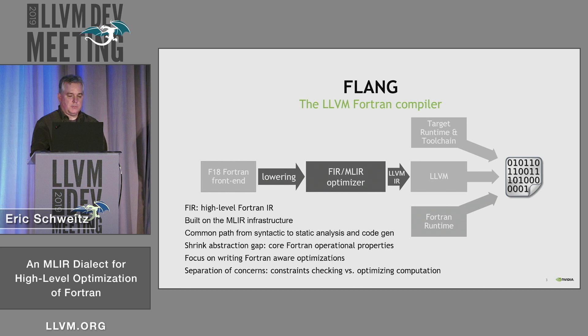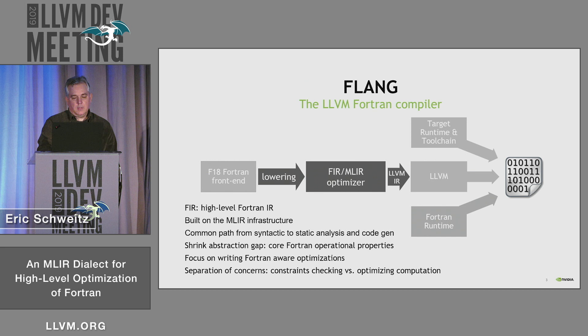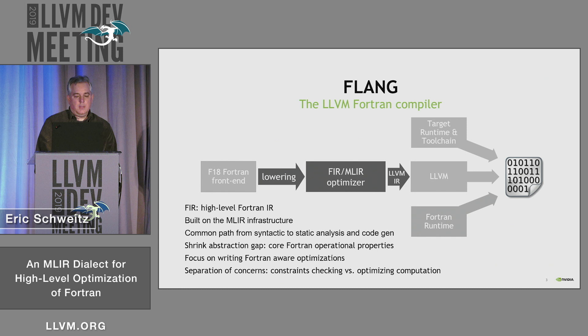The Fortran IR is intended to be a higher-level IR to lower the semantics gap between Fortran itself, rather than dropping straight to LLVM or a low-level IR. The point being that we want to write Fortran-aware optimizations. It also lets us separate concerns — the F-18 project can focus on parsing and constraint checking, while the middle end focuses on optimizing those computations.